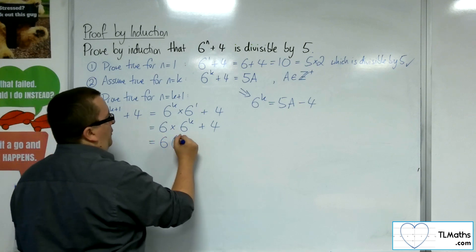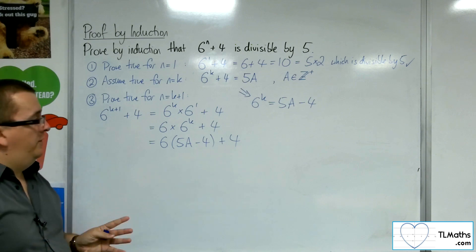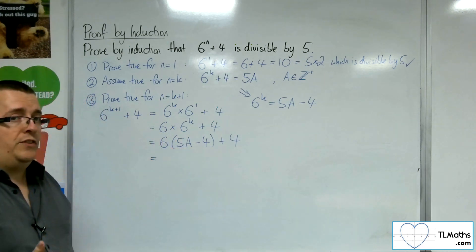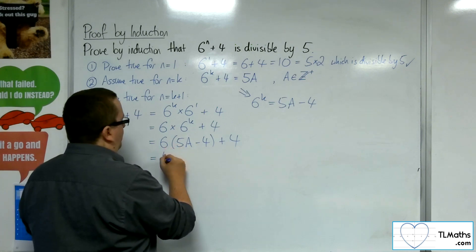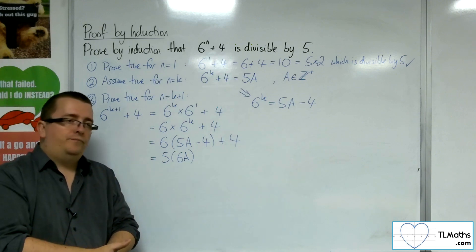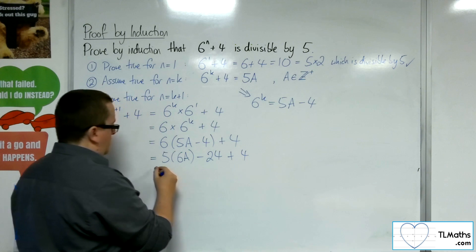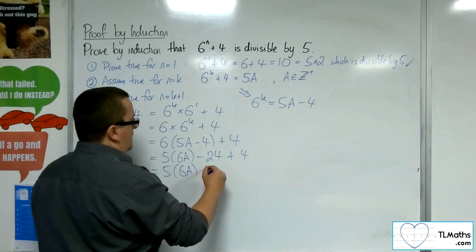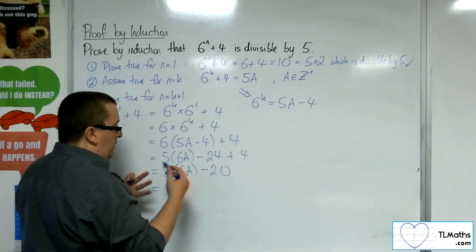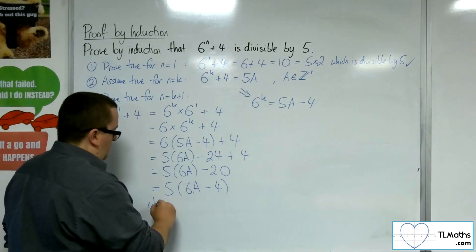So I've got 6 lots of (5a minus 4) plus 4. I want to show that's divisible by 5, so I expand the bracket. 6 lots of 5a gives 30a, but I'll write that as 5 lots of 6a to show divisibility clearly. Then 6 lots of minus 4 is minus 24, and we have plus 4 on the end. So that's 5 lots of 6a, and minus 24 plus 4 is minus 20. Factoring out the 5 gives 5 times (6a minus 4), which is clearly divisible by 5.